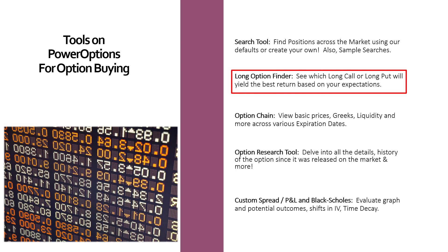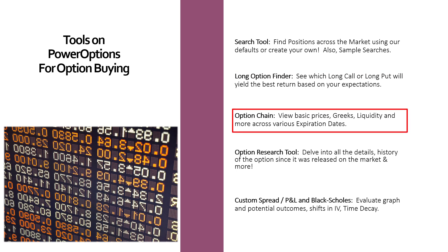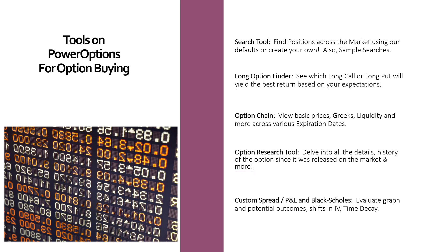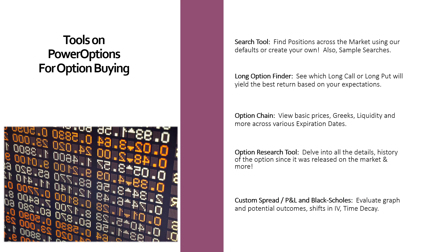The Long Option Finder lets you see which long call or long put will yield the best return based on your expectations for the underlying security. The Option Chain lets you view basic prices, Greeks, liquidity, and more across various expiration dates. The Option Research Tool lets you delve into all the details and history of the option since it was released on the market. The Custom Spread, profit and loss chart, and the Black-Scholes calculator let you evaluate the graph of the potential position and outcomes, determining shifts in implied volatility, time decay, and more.